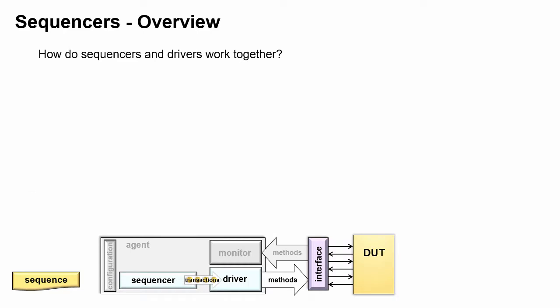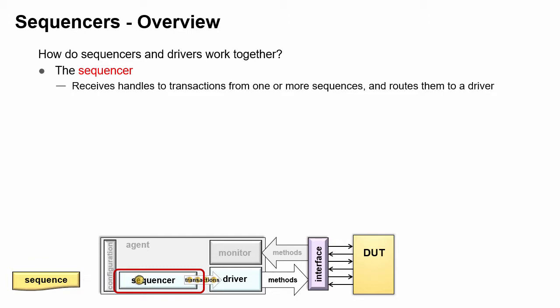How do UVM sequencers and drivers work together? The sequencer, which is part of an agent, is sent transactions by a sequence, and then sends them to the driver in this agent.